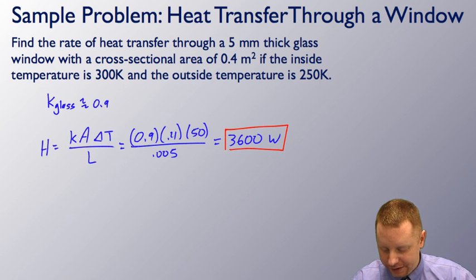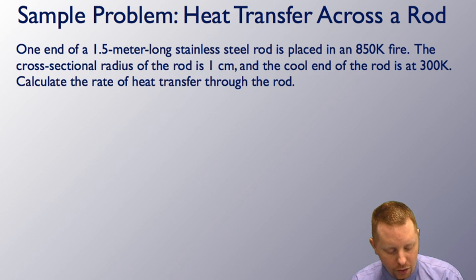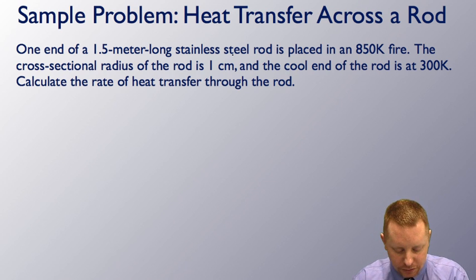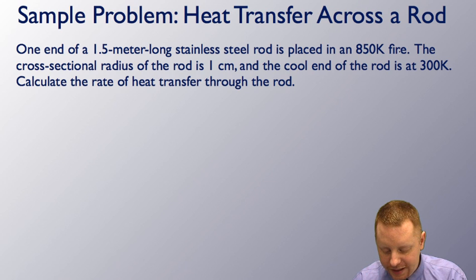Let's take a look at one more example. One end of a 1.5 meter long stainless steel rod is placed in an 850 K fire. The cross-sectional radius of the rod is 1 centimeter, and the cool end of the rod is at 300 K. Calculate the rate of heat transfer through the rod.